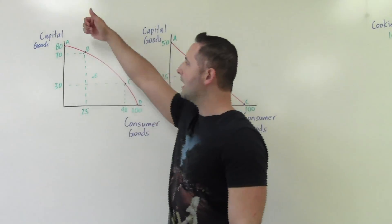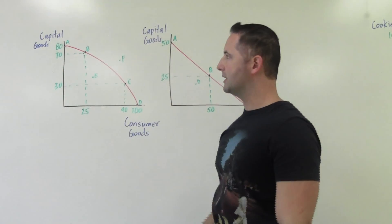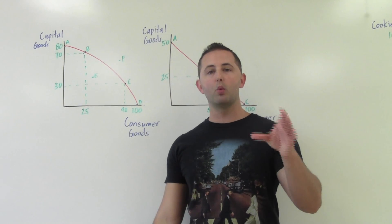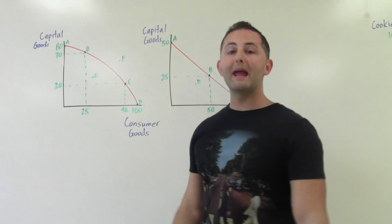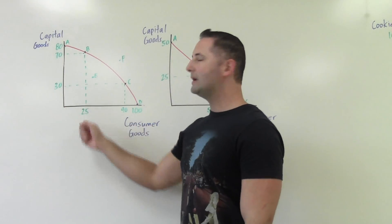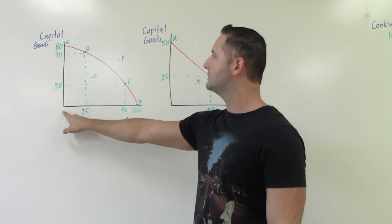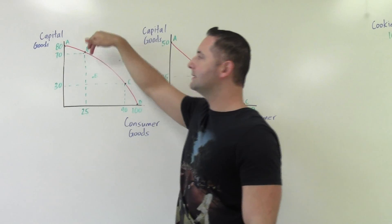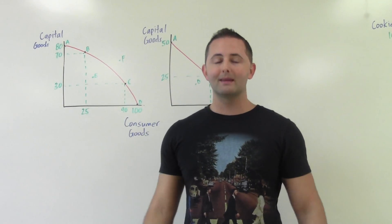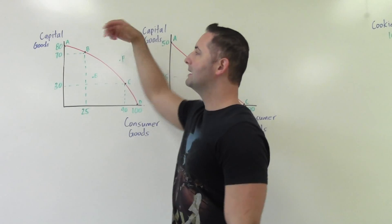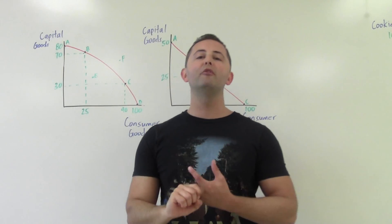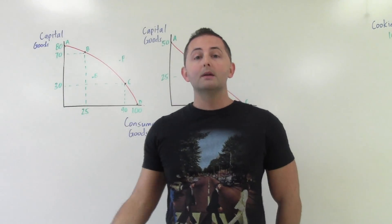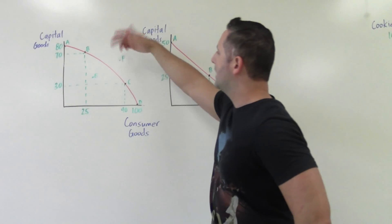You've given up not only the seven dollars but the opportunity to use it for something else. On the PPC, if we move from point A to point B, what is the opportunity cost? Opportunity cost is what is being given up. We're gaining 25 consumer goods — going from zero to 25 — so that's not the cost. What we're giving up is capital goods going from 80 to 70, so 80 minus 70 equals 10. The answer is 10 capital goods — it's pivotal to label it specifically; '10' alone would not be a correct answer.